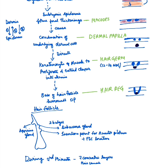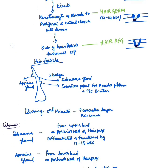After dermal papilla formation, the keratinocytes of the placode proliferate to extend deeper into the dermis to form the hair germ, which by the 12th to 14th week surrounds the base of the hair follicle — surrounding the dermal papilla to form the hair peg. The hair peg has two bulges on the posterior surface: the first superficial bulge forms the sebaceous gland, and the lower bulge becomes the insertion point for the future arrector pili muscle and the hair bulge region where follicular stem cells are located. An additional bulge on the anterior surface forms the apocrine gland.